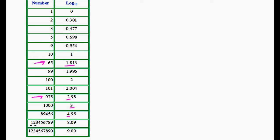A big number consisting of 9 digits has a logarithm of 8.09. So there are 9 digits and the logarithm starts with 8. Another number consisting of 10 digits has a logarithm starting with 9.09. So we can see a particular behavior: where the number of digits is 10, the logarithm starts with 9; where digits is 9, logarithm starts with 8; and if the number of digits is 2, logarithm is 1 point something.